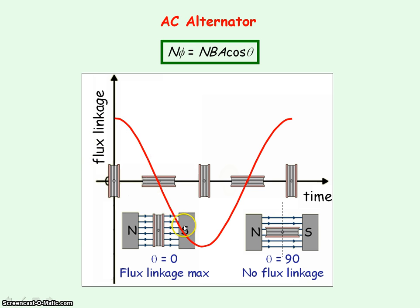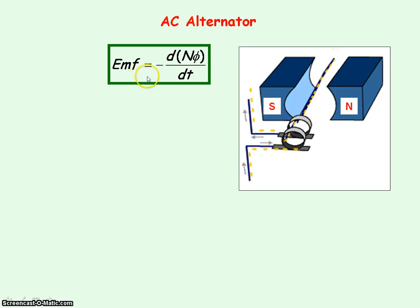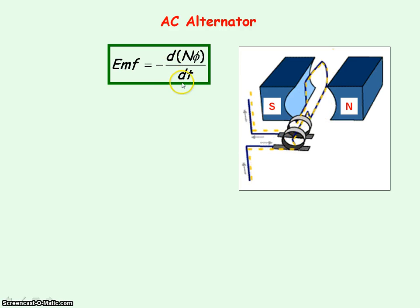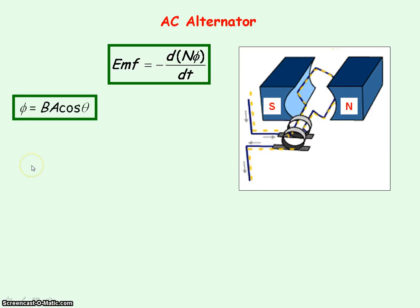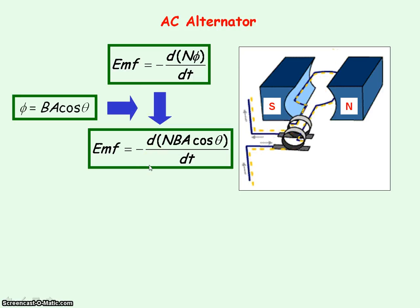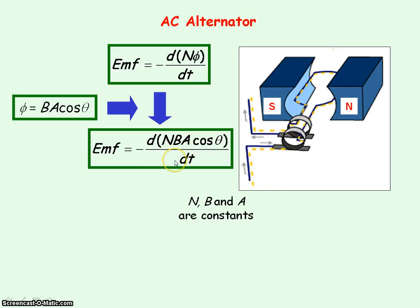As the flux linkage through the coil is changing, we're going to get an induced EMF. Faraday's law states that the induced EMF is equal to the rate of change of flux linkage, which we can represent as a differentiation with respect to time t. The minus sign is for Lenz's law. We know magnetic flux is given by this, so if we substitute for magnetic flux into our equation for induced EMF, we'll get this. N, B, and A are constant, so they do not change with time.